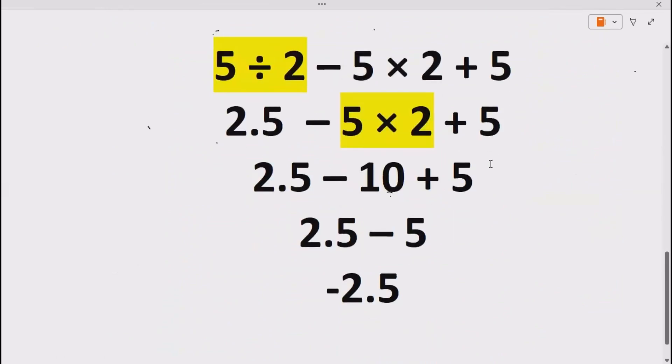Now let's see how we can solve our expression using this method. We are given 5 divided by 2 minus 5 into 2 plus 5.